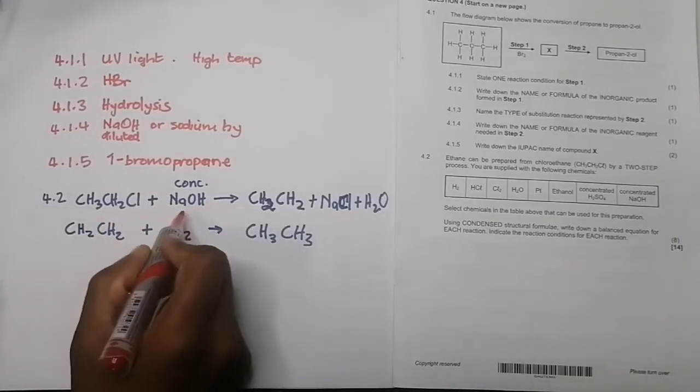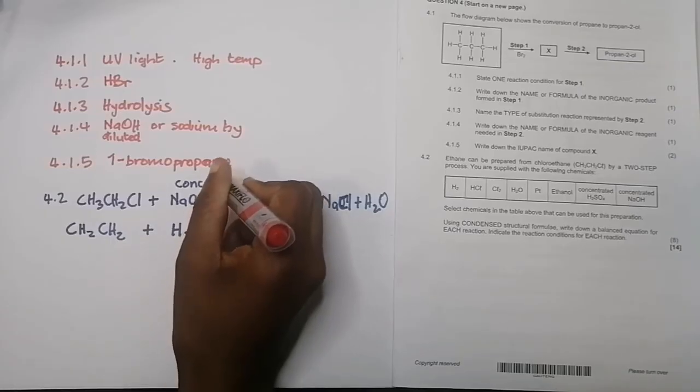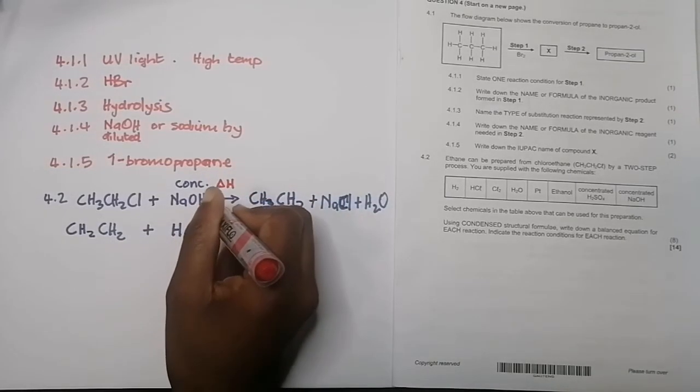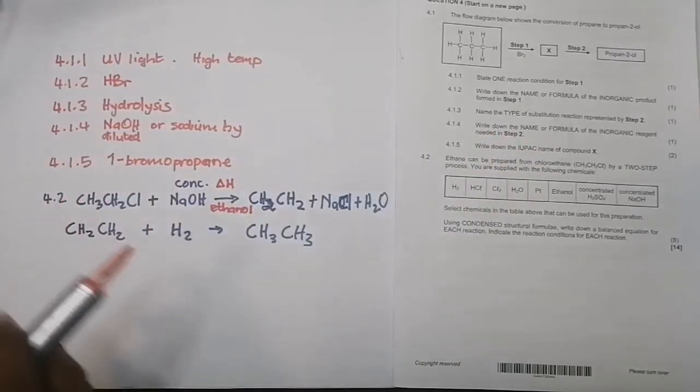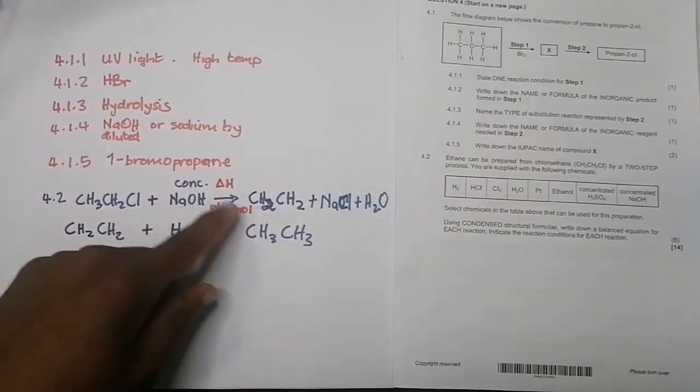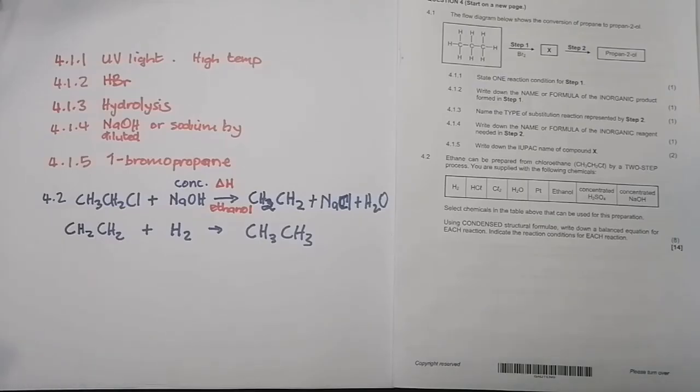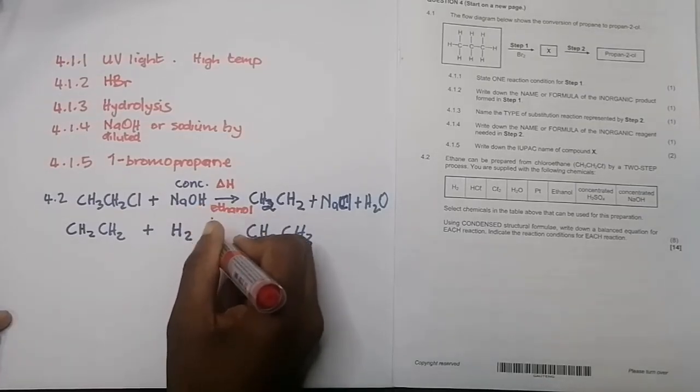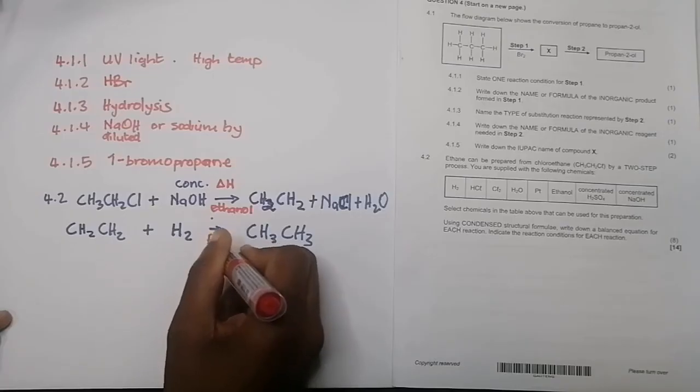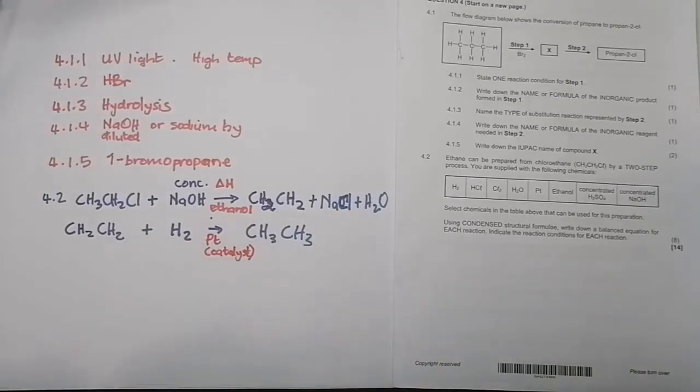Now let's talk about the conditions of each. Remember when I'm reacting sodium hydroxide, of course we use concentrated sodium hydroxide, but it must be in high temperatures (delta H) in the presence of ethanol, which is also what was provided over there. So that's the first one - those are the reaction conditions for this one. And now going for the second reaction, usually platinum is used as a catalyst. So remember that you've got a catalyst in the form of platinum over there, and so those are the two reaction conditions.